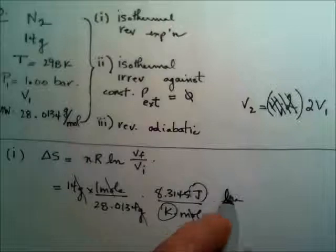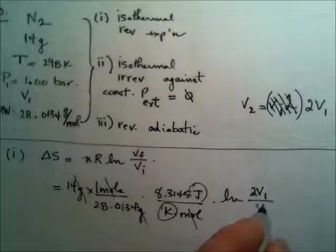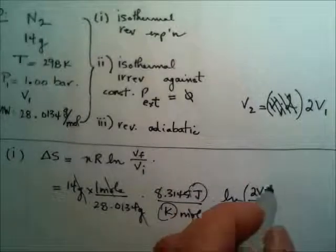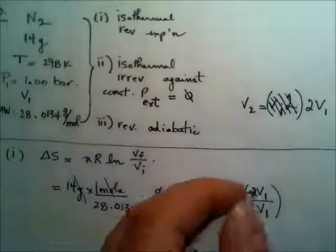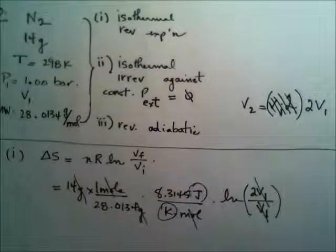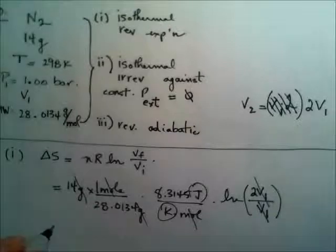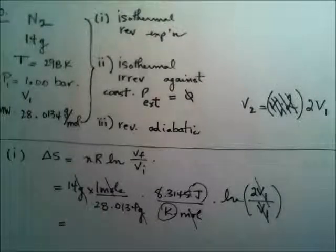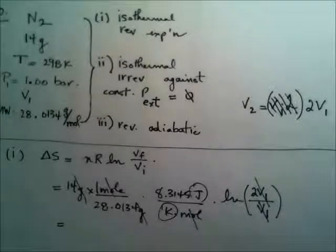So V final is, how about we write it like this just to really drive that point home. And I don't actually need to know the values because these will cancel and it's just the ln of 2. Okay, so the ln of 2 is 0.693.